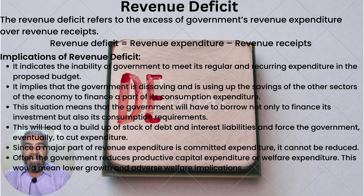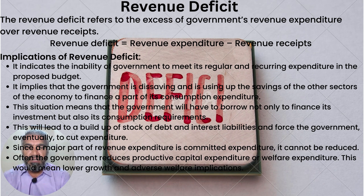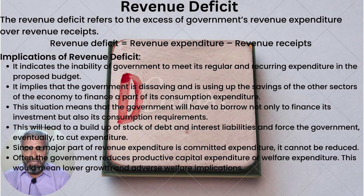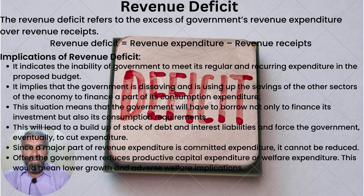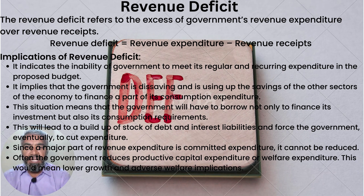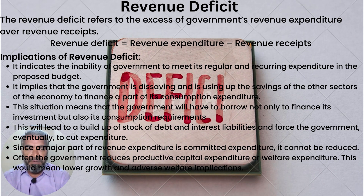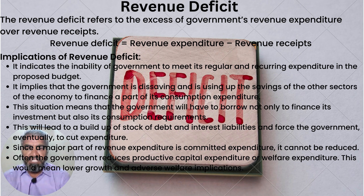This will lead to a buildup of stock of debt and interest liabilities, and force the government eventually to cut expenditure. Since a major part of revenue expenditure is committed expenditure which cannot be reduced, often the government reduces productive capital expenditure or welfare expenditure.